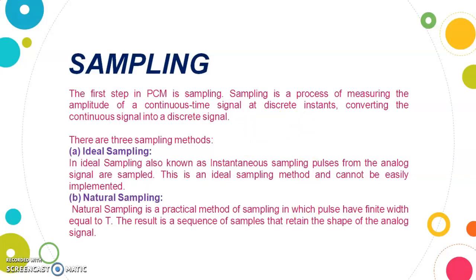Sampling is the process of measuring the amplitude of a continuous time signal. Since analog waveforms are in the form of continuous time signals, we measure the amplitude of those signals at discrete instants — at different time frames. We convert that continuous signal into a discrete signal at the points where we have measured it, and collect those to make a sample.